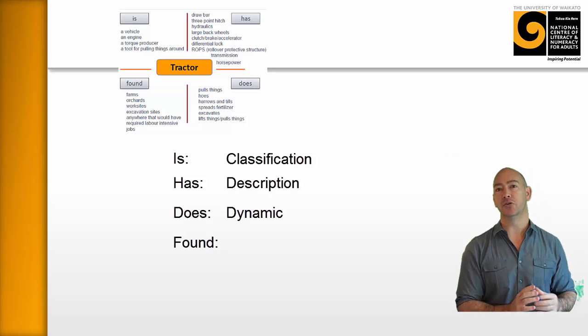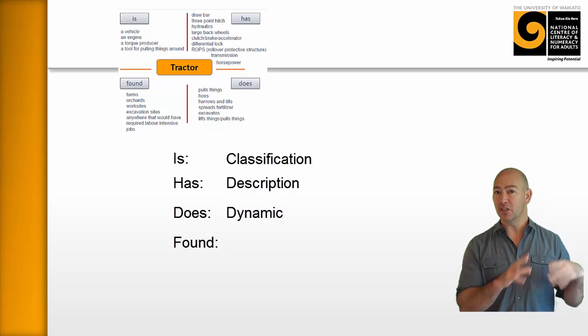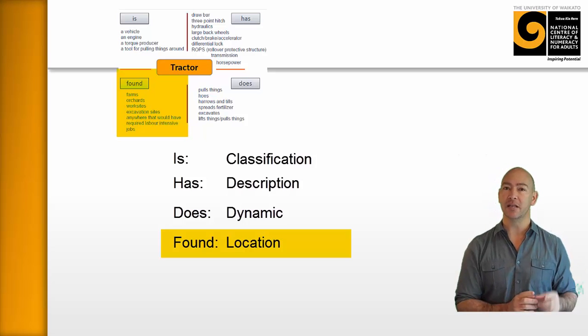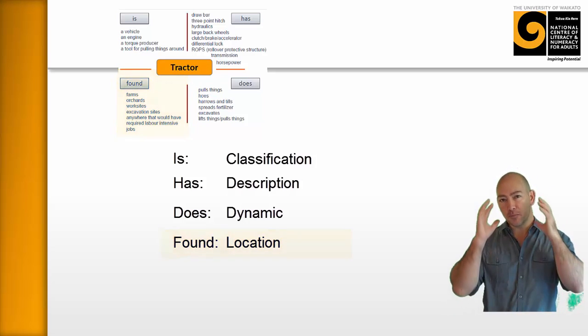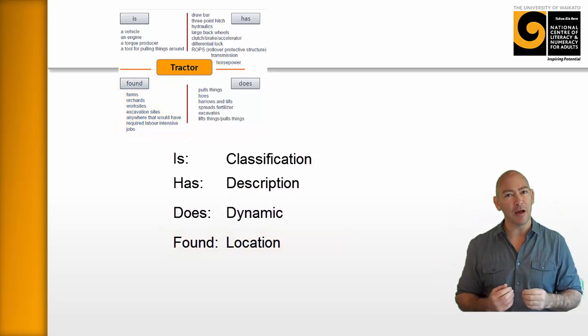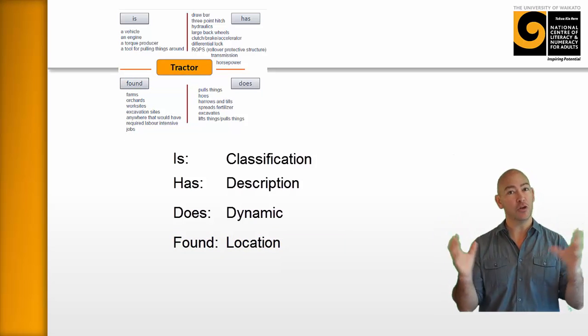And then finally, if we move over into found, found is location. And that really situates the object within its environment. And the idea is that these four things all help the learner conceptualize that object and develop a sort of a schema for thinking about and attaching new information to.